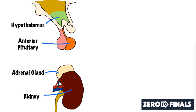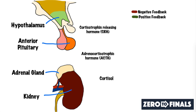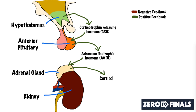Now let's add in some hormones and a key to understand them, talking about the positive effects first. The hypothalamus produces a hormone called corticotrophin releasing hormone, or CRH. This CRH targets the anterior pituitary, where it stimulates the release of adrenocorticotrophic hormone, or ACTH. This ACTH then targets the adrenal gland, where it stimulates the production of a hormone called cortisol.